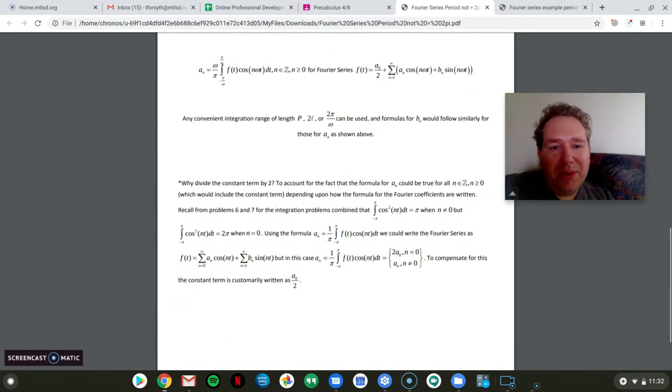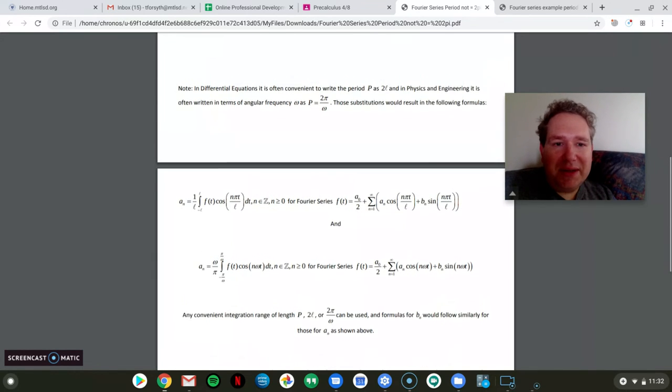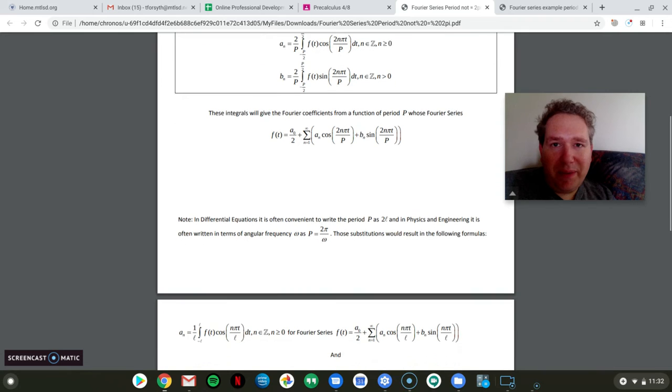And then you can read through here, why sometimes you'll see the constant term being written as A nought over 2. A nought over 2 would be just so that you can index it with the other cosines with the A sub n formulas in there. It's not always written in that way. It's really just the location of the sinusoidal axis or the axis of symmetry of the periodic function, which we'll see in our example again. So the formulas are just a little bit different depending upon if the period is not 2π.